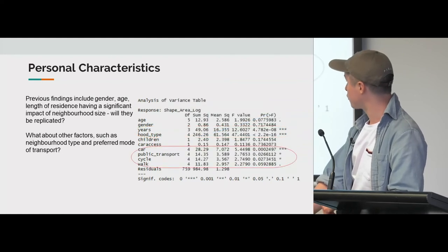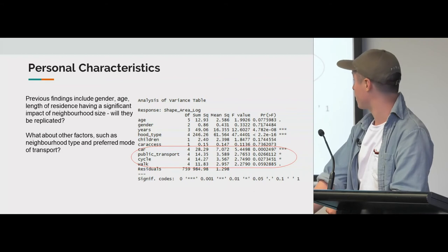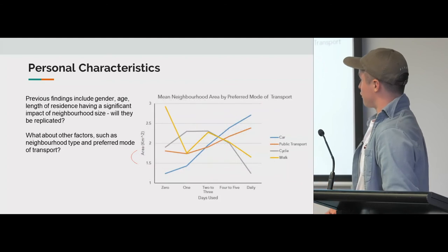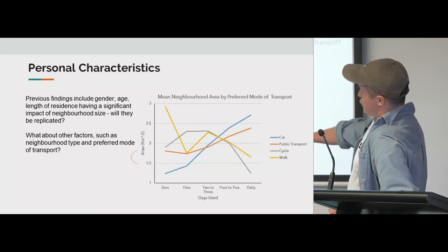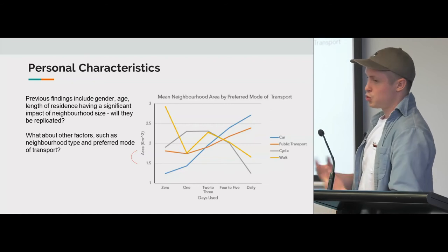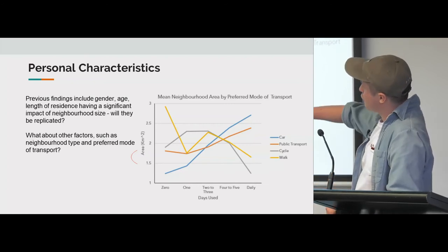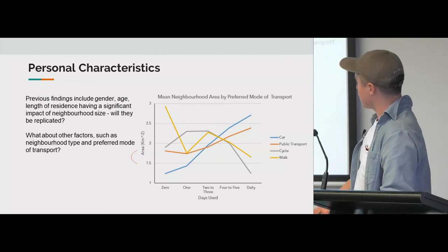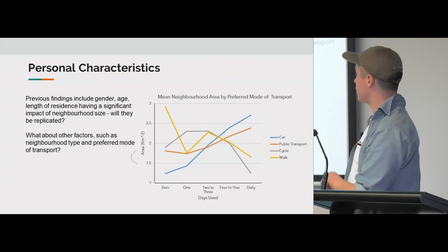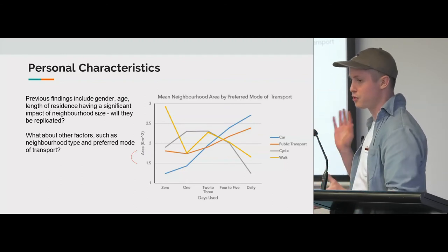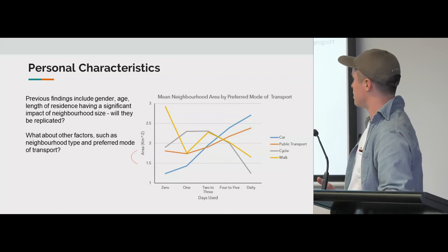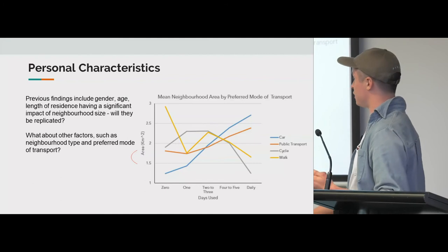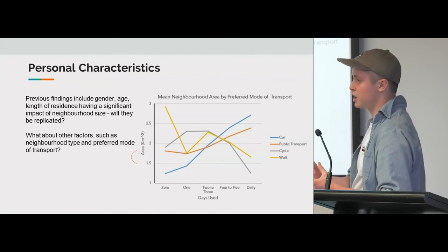Transport mode was also significant — the number of days using each of four modes of transport were all significant, with car access being highly significant. For cars there's a significant increase in neighbourhood size. But for walking it was the opposite effect — a decrease. This can be explained by people in cars experiencing more of the neighbourhood, but also by urban bias: people in the city don't have cars and delineate smaller neighbourhoods versus rural people.